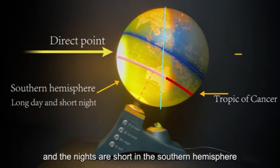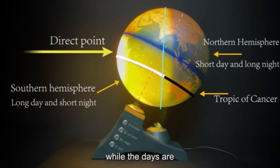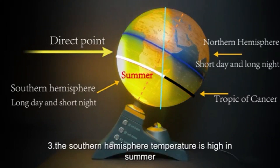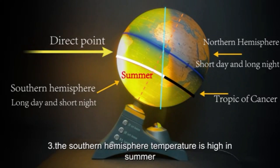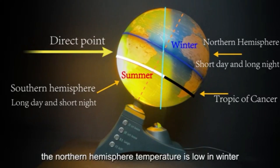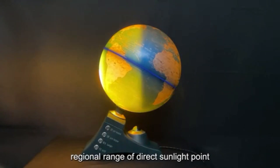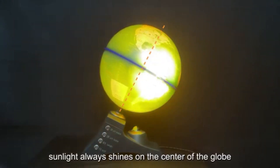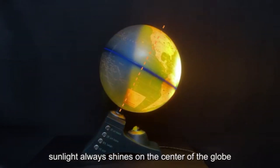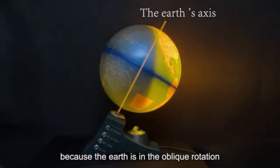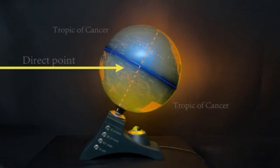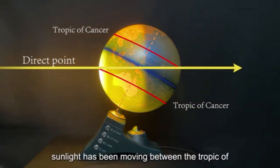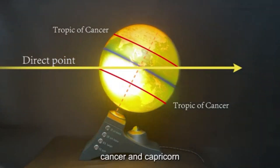During Winter Solstice, days are long and nights are short in the southern hemisphere, while days are short and nights are long in the northern hemisphere. The southern hemisphere temperature is high in summer and the northern hemisphere temperature is low in winter. The point of direct sunlight always shines on the center of the globe, and because the Earth is in oblique rotation, you can intuitively see the direct sunlight point moving between the Tropic of Cancer and the Tropic of Capricorn.